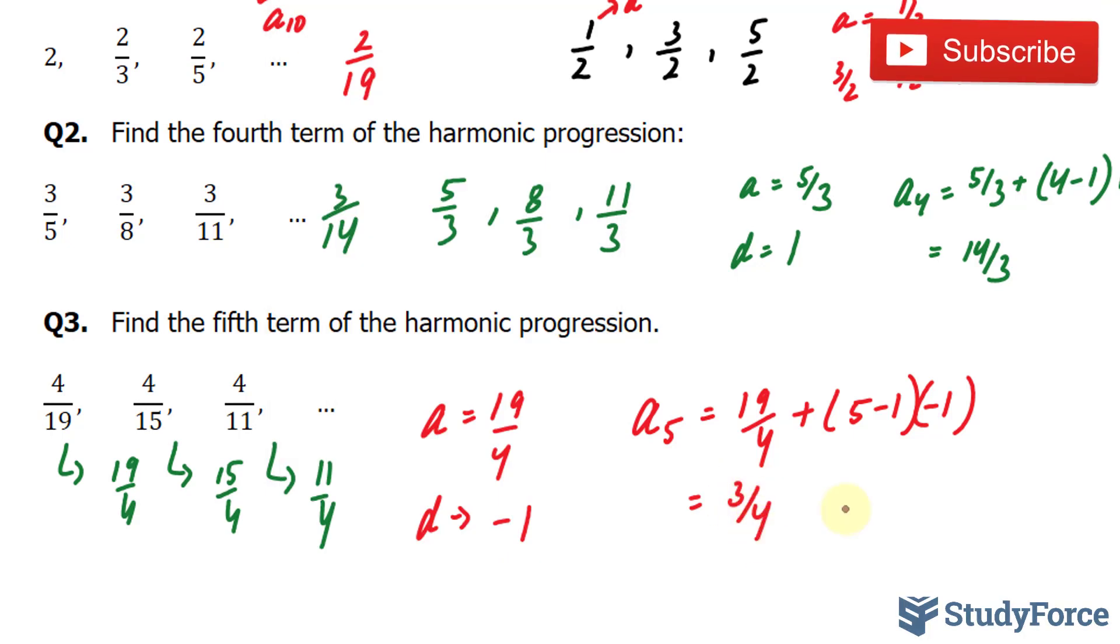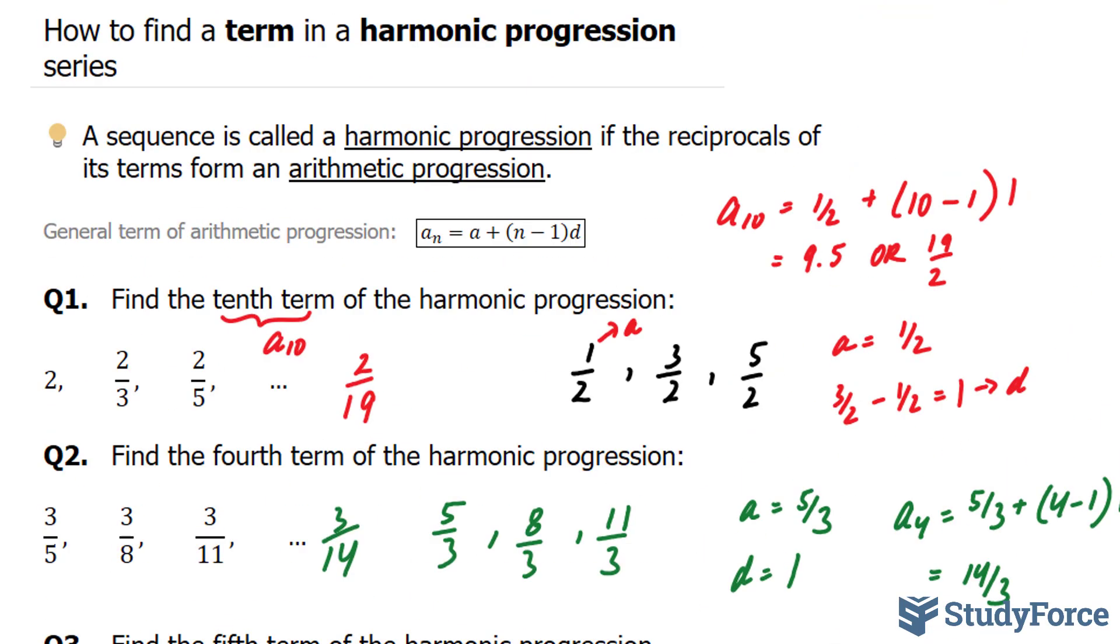The fifth term therefore will be 4 over 3. And so there you have it. Three examples on how to find a term in a harmonic progression series.